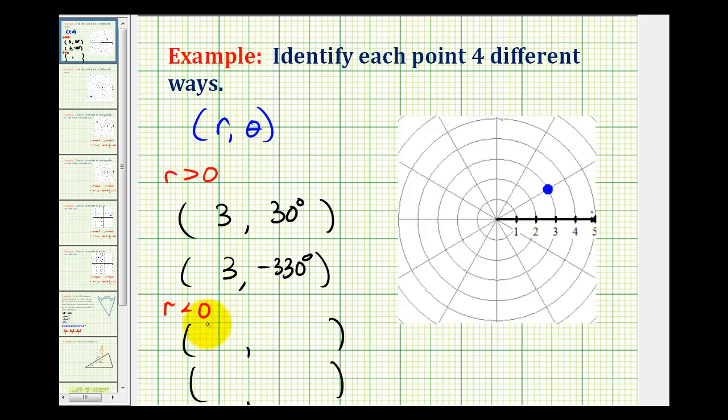So again, if we select r to be negative three this time, that means that our angle theta must have a terminal side that points in the opposite direction, or the terminal side of the angle must be here.